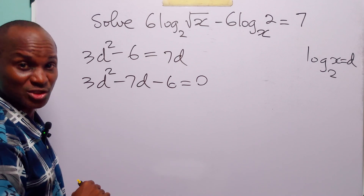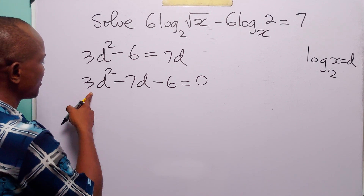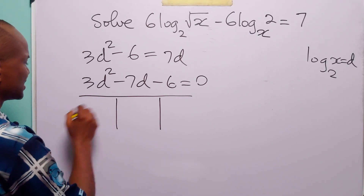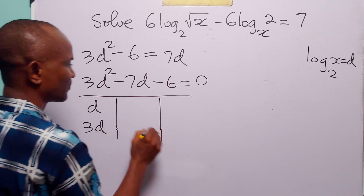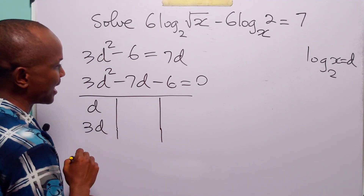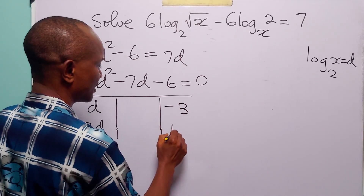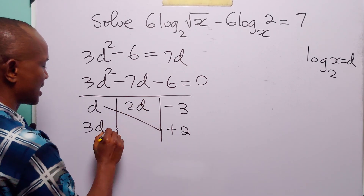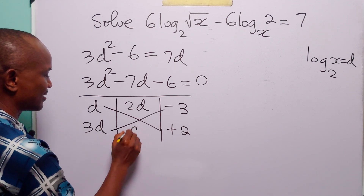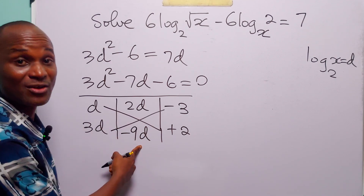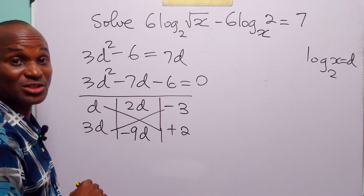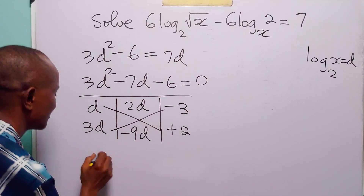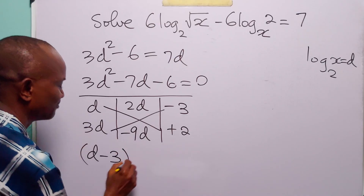Now we can solve this quadratic equation by factorization. Since the coefficient of d squared is not 1, let us use the table method. The factors of 3d squared are d and 3d. The factors of minus 6 are minus 3 and plus 2. D times plus 2 gives 2d, and 3d times minus 3 gives minus 9d. Minus 9d plus 2d gives minus 7d. So the factors of this quadratic are (d minus 3) and (3d plus 2).